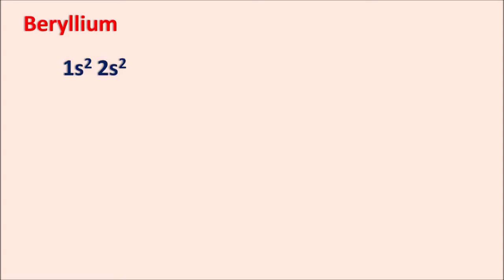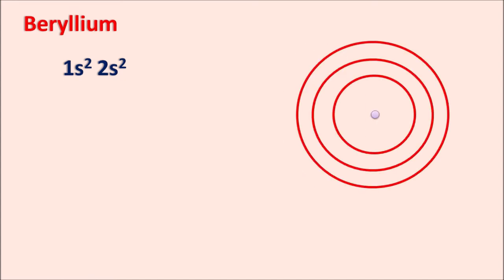Let us take an example of the atom beryllium. It has atomic number 4, so its electronic configuration is 1s2, 2s2. Two electrons are present in the 1s orbital and the other two electrons are present in the 2s orbital. The second orbit also has another orbital, that is the 2p orbital.